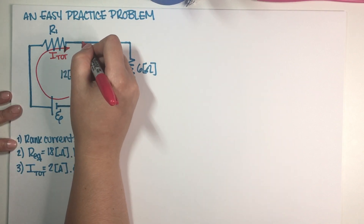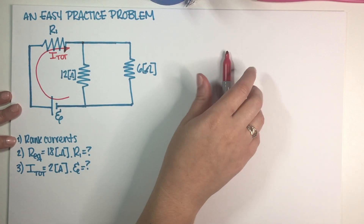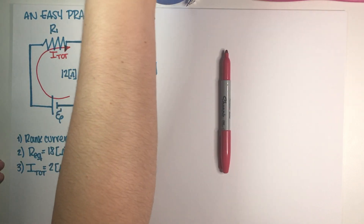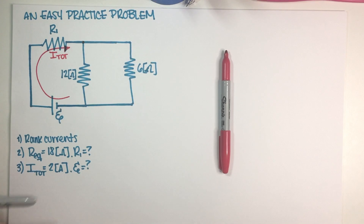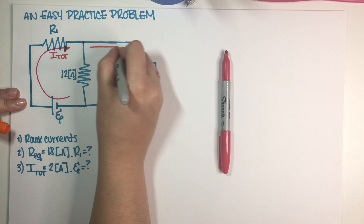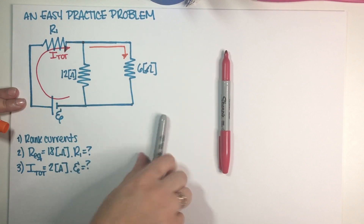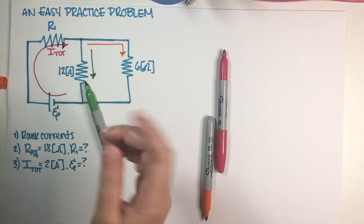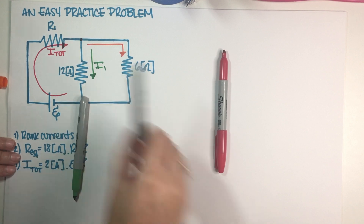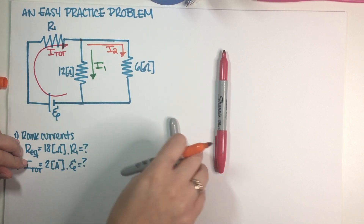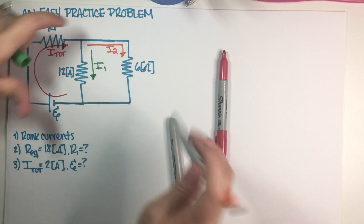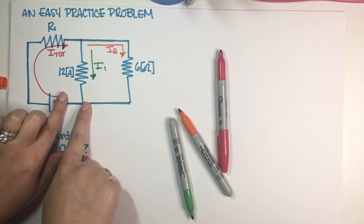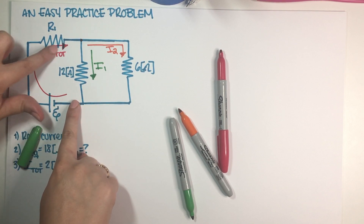Once we hit this junction over here, remember from lecture: whenever we hit a junction, the current splits up. So the current basically splits into two currents — one current follows this path, and the other current goes down here. I'll call them I1 and I2. Then once these two currents get to the other junction, they recombine, and we get all of the current back.